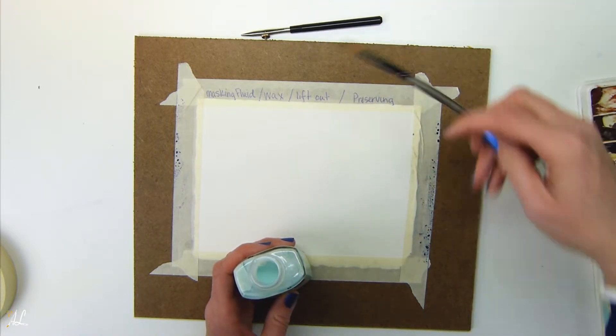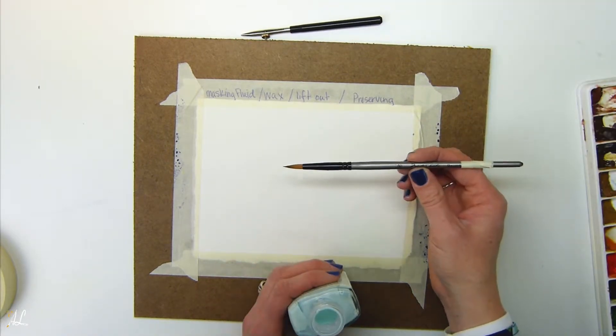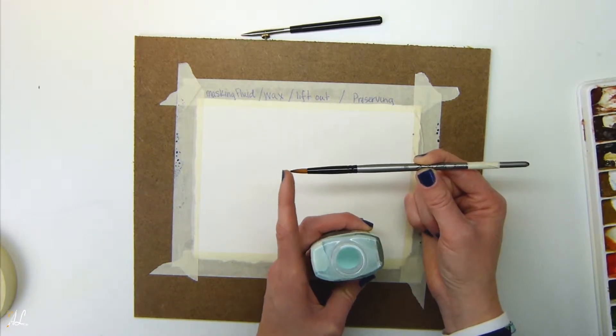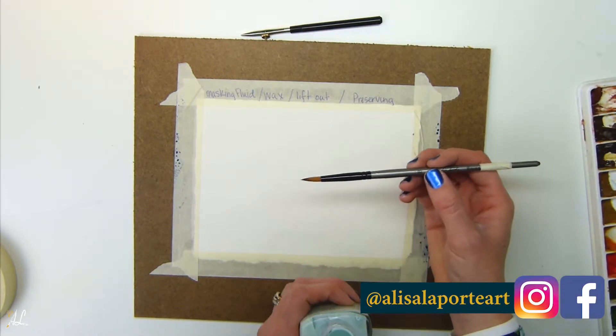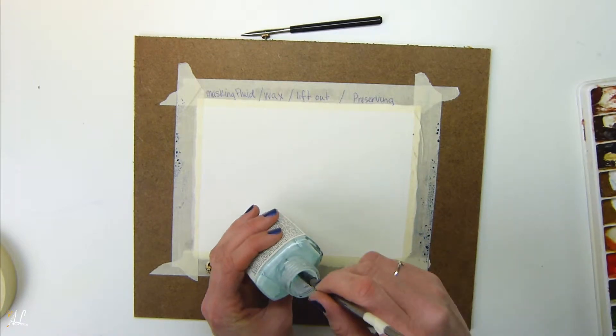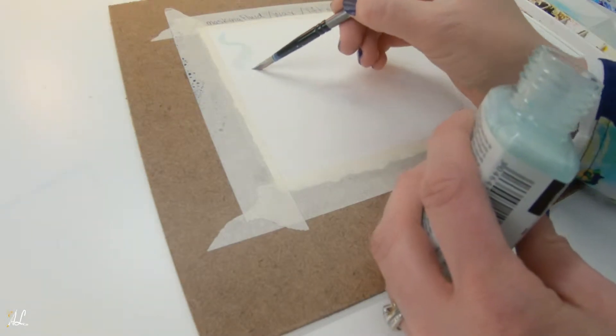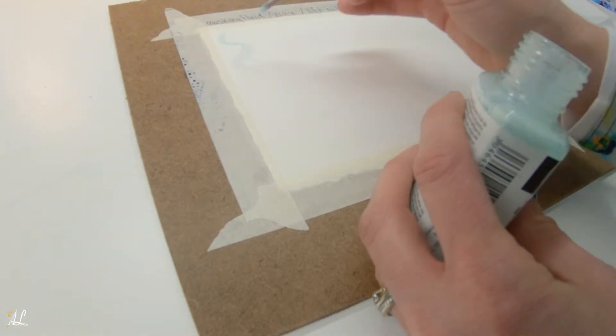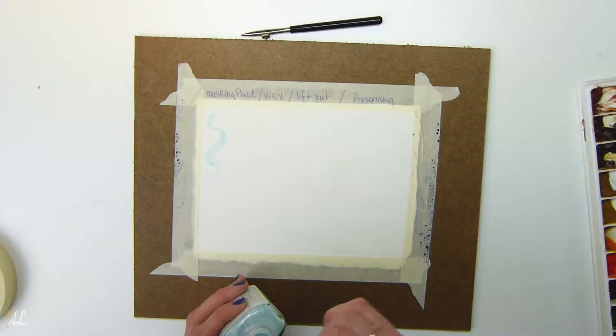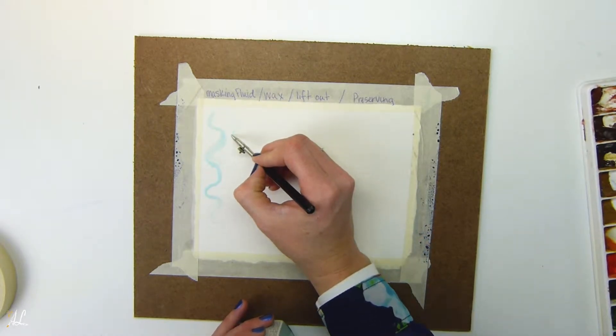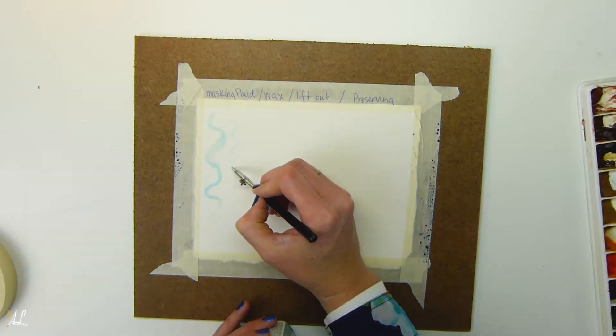I mostly use a dip pen unless I want to cover a larger area which I will use a brush. If you use a brush be sure to have a specific brush for using masking fluid. If the masking fluid hardens on your bristles it will damage them. So I put tape on the end of my brush to let me know that this is specifically for my masking fluid. Usually when using masking fluid you do not want it to stay on your paper for very long or it can damage it. A day or two is fine but if it's on there for weeks then it will actually lift up your paper. Careful with that.